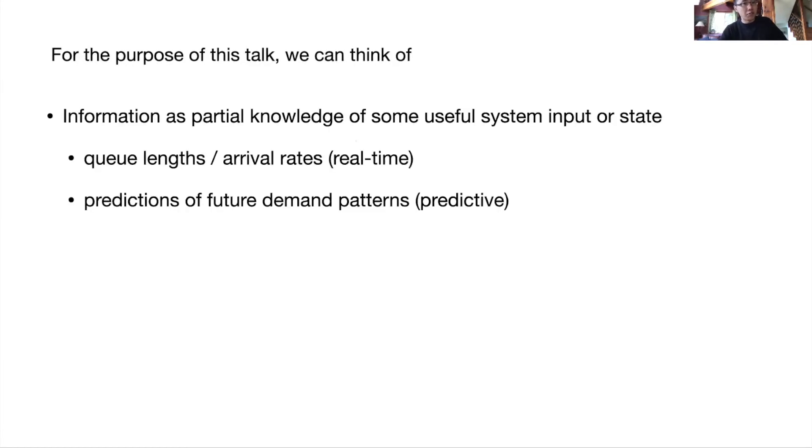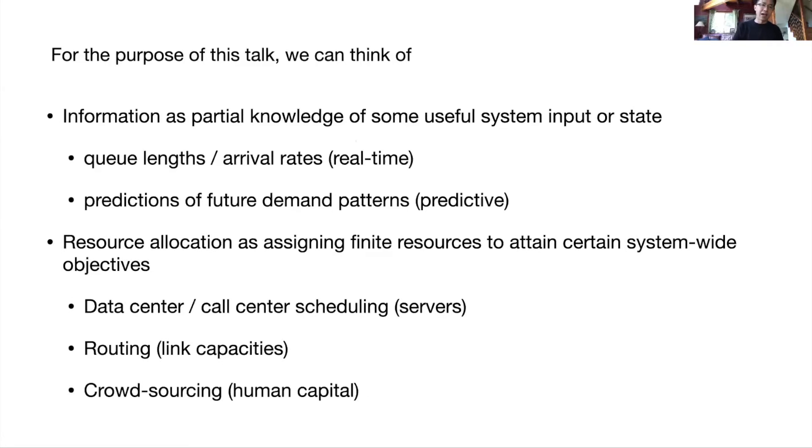Disclaimer: all the non-theorem material in this talk will be mostly personal reflections, which means I do not make any claims as to how novel they are. And of course, I'm woefully missing essentially all of the references. For the purpose of this talk, we can think of information as partial knowledge of some useful system input or state. For example, queue lengths in a queueing system or arrival rates to a queueing system. That's typically what we call real-time information. Other times we can look at predictive information, and these are information about the future. For example, predictions of future demand patterns or arrivals to a queueing system.